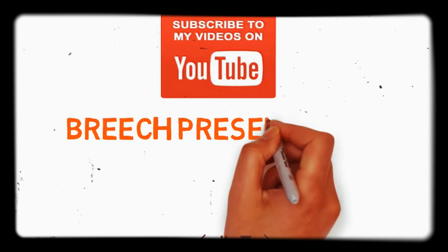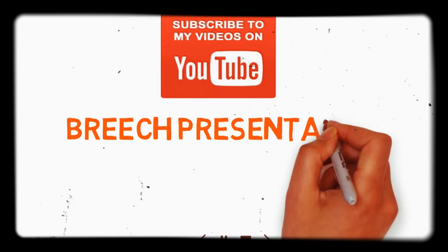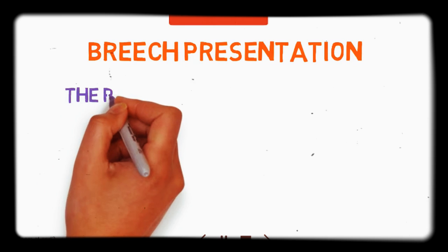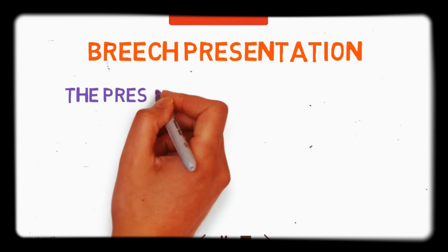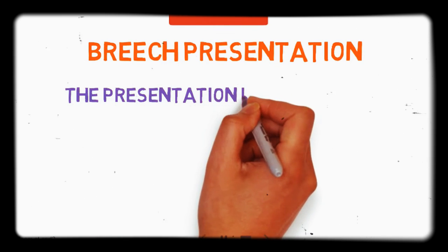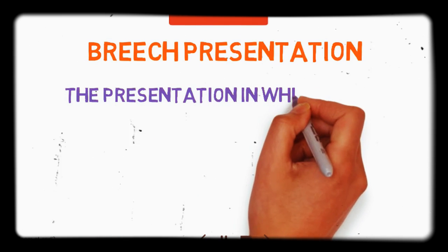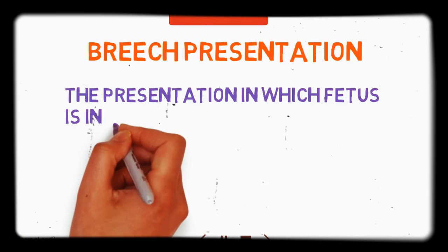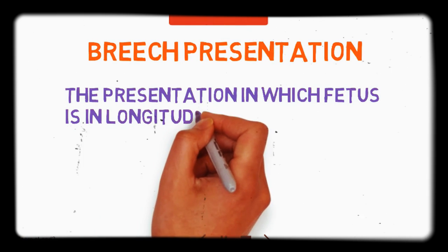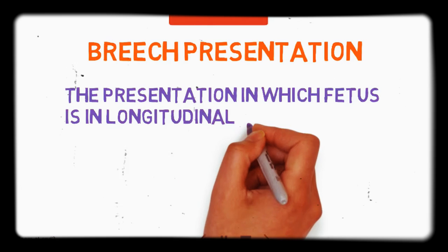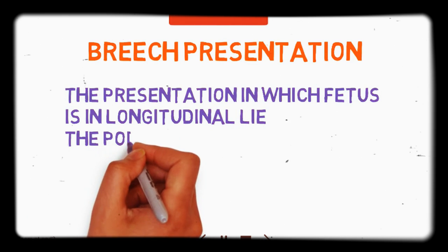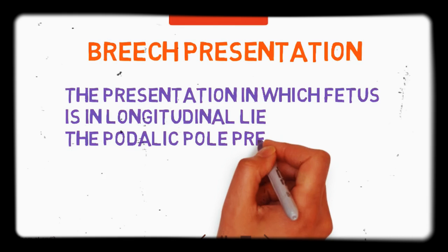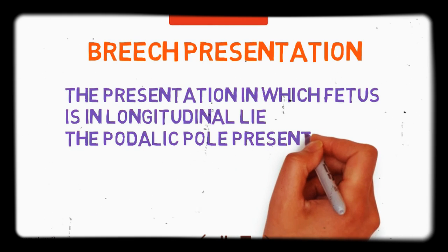So what is breech presentation? It is a presentation in which the fetus is in the longitudinal lie, and the podalic pole is present at the pelvic brim. Normally, the head of the fetus faces the pelvic brim. Here, what is happening is the buttocks and legs are facing the pelvic brim. That is known as breech presentation.